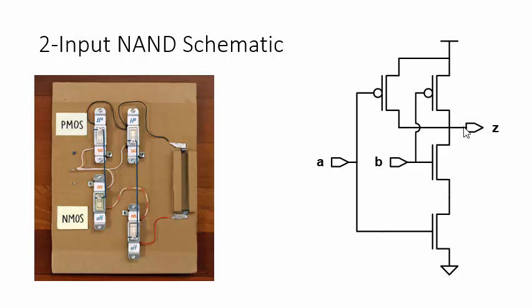Two NMOS transistors are connected in series between the output and ground. Two pairs of connected gates serve as the NAND inputs.